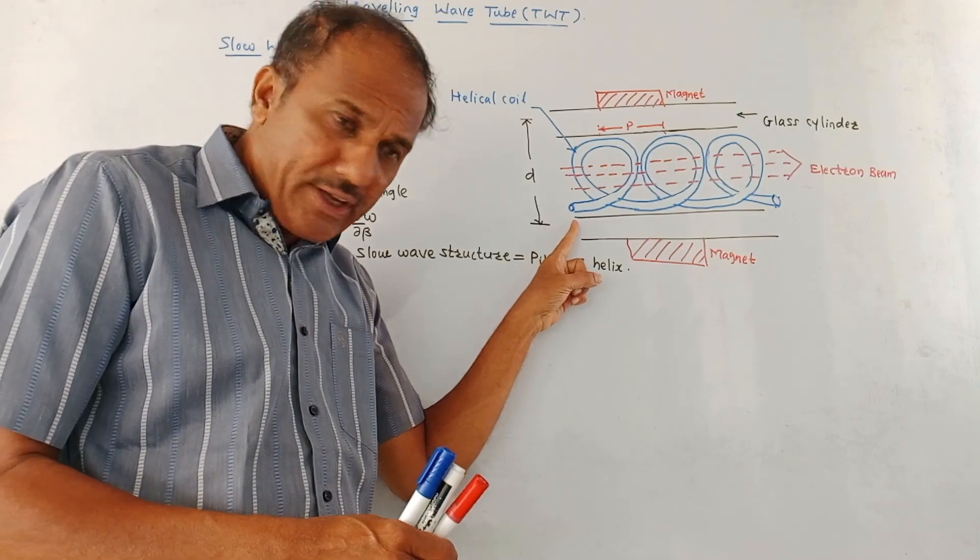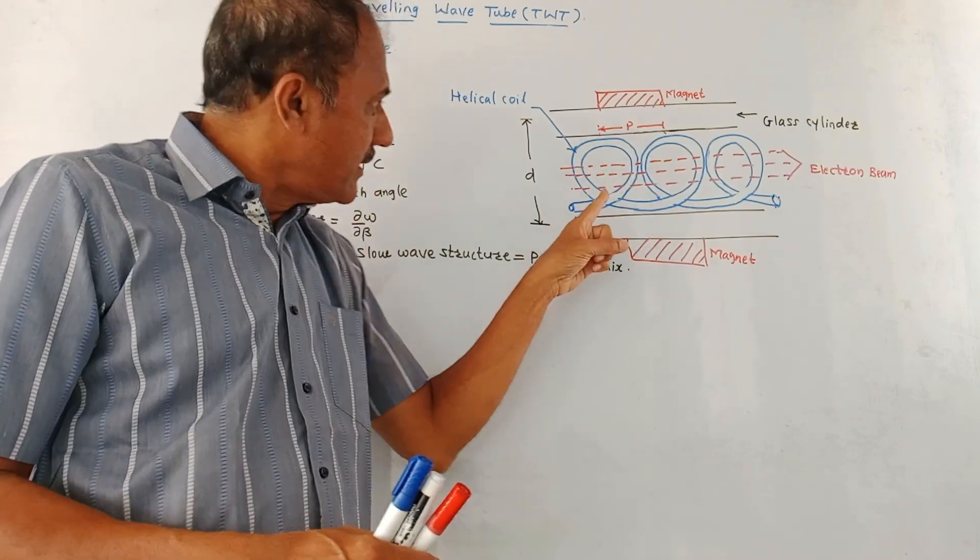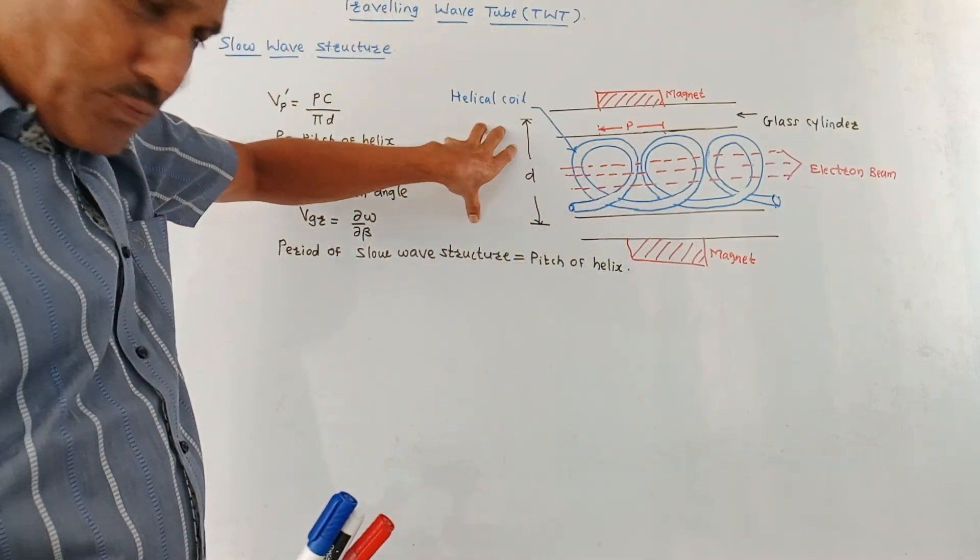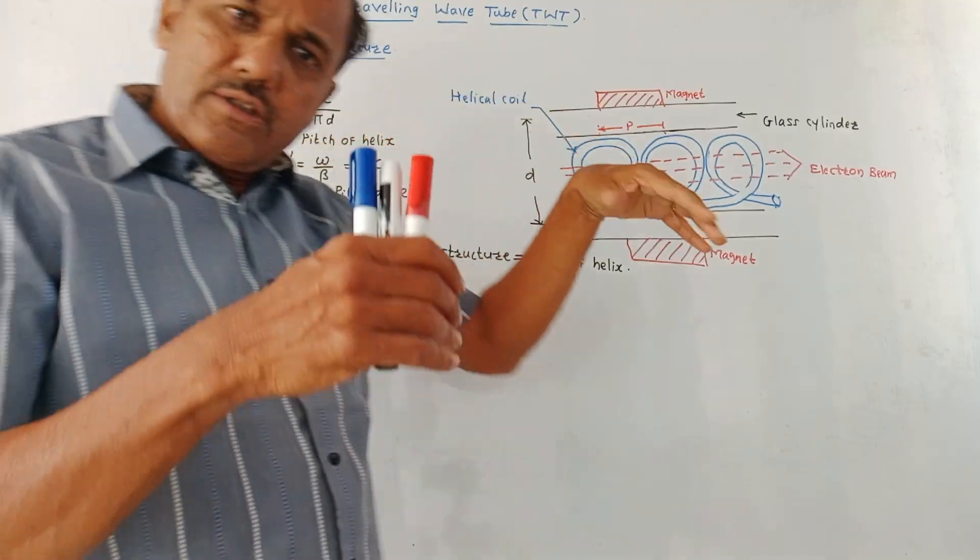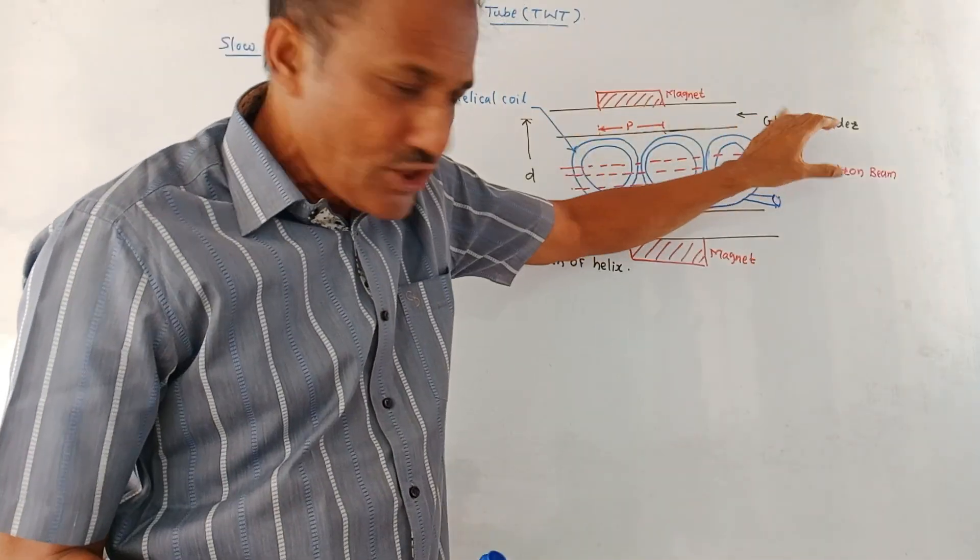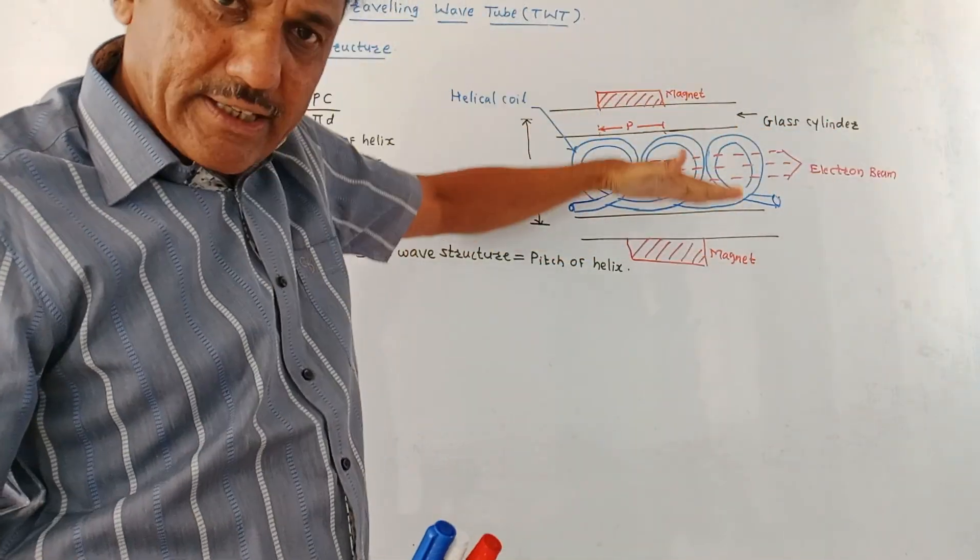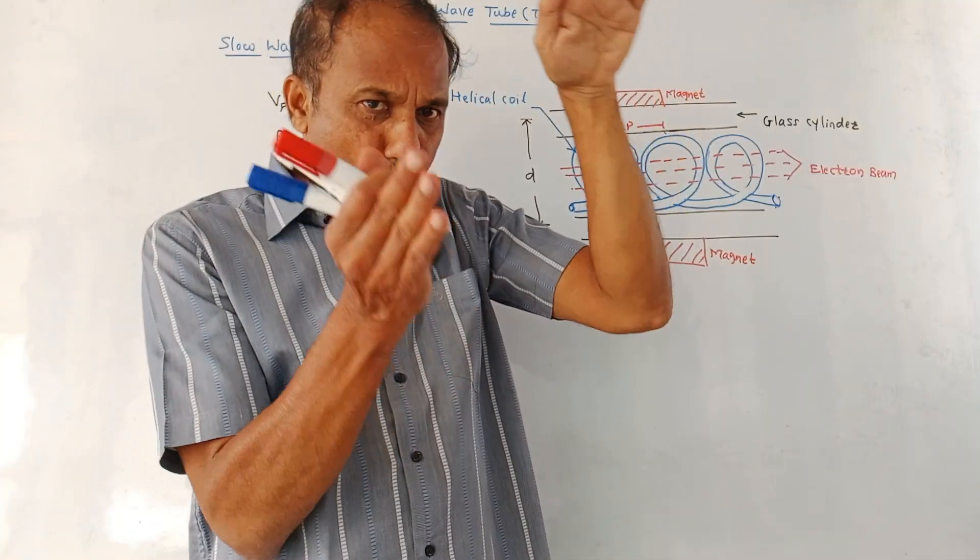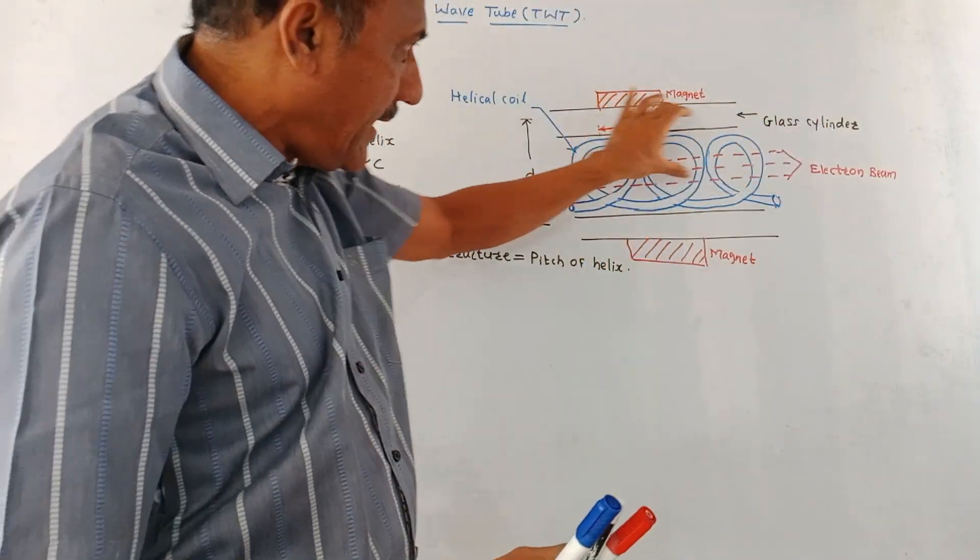Now at one end of this helical coil, RF field is applied. At this point, some cathode is used which is generating the electron beam. This electron beam travels in a forward direction. Two magnets are shown in the diagram. These magnets are used to properly align the electron beam.